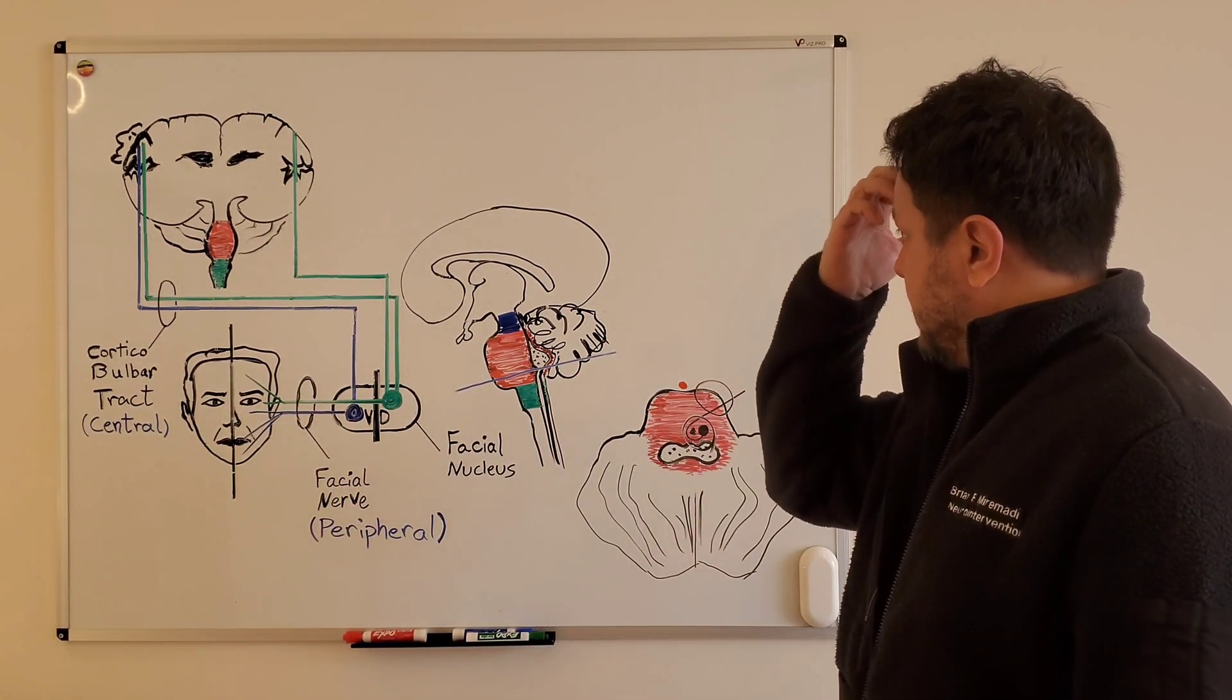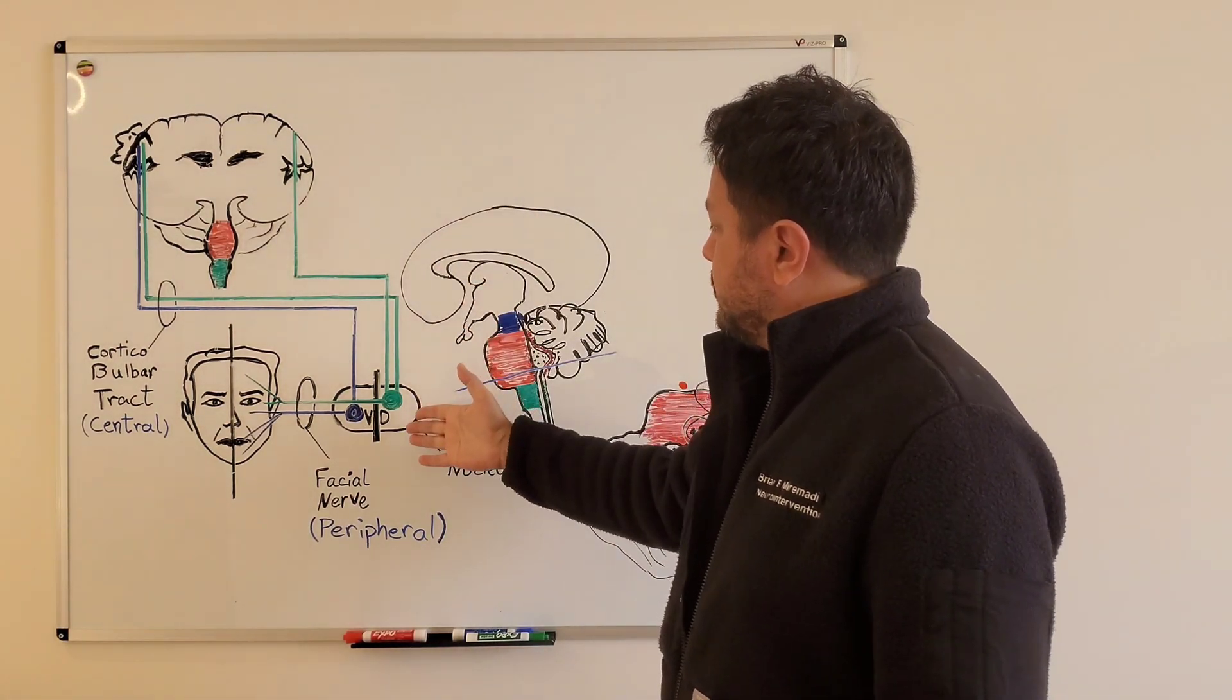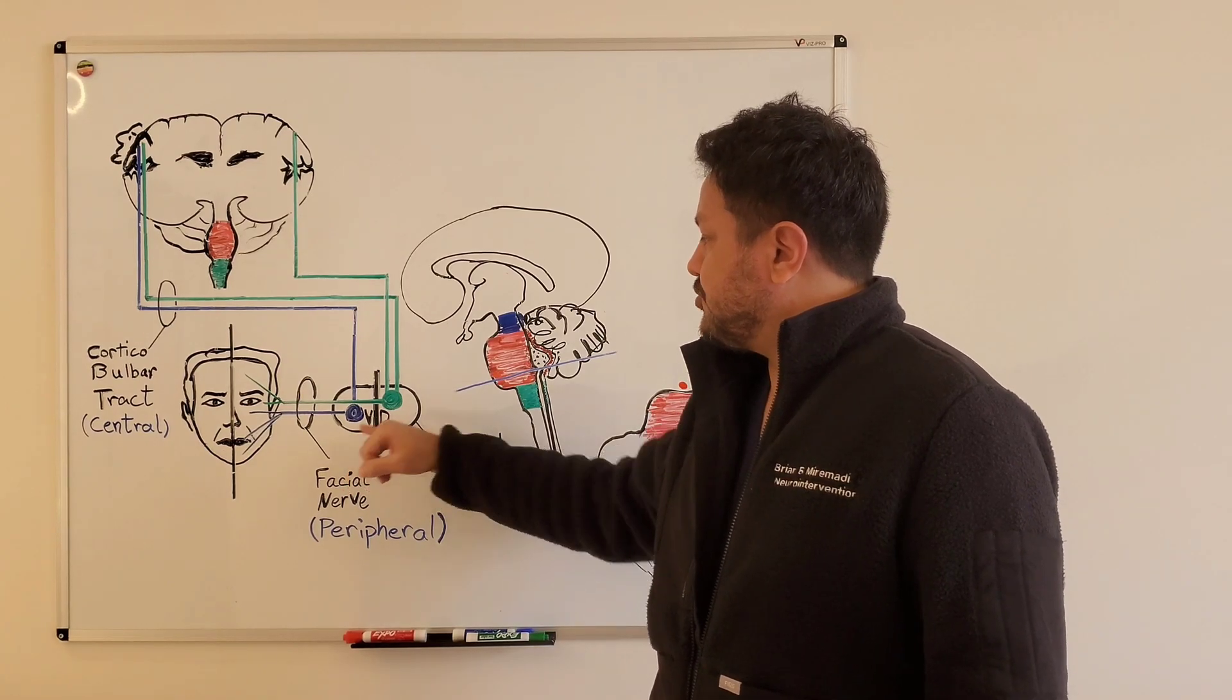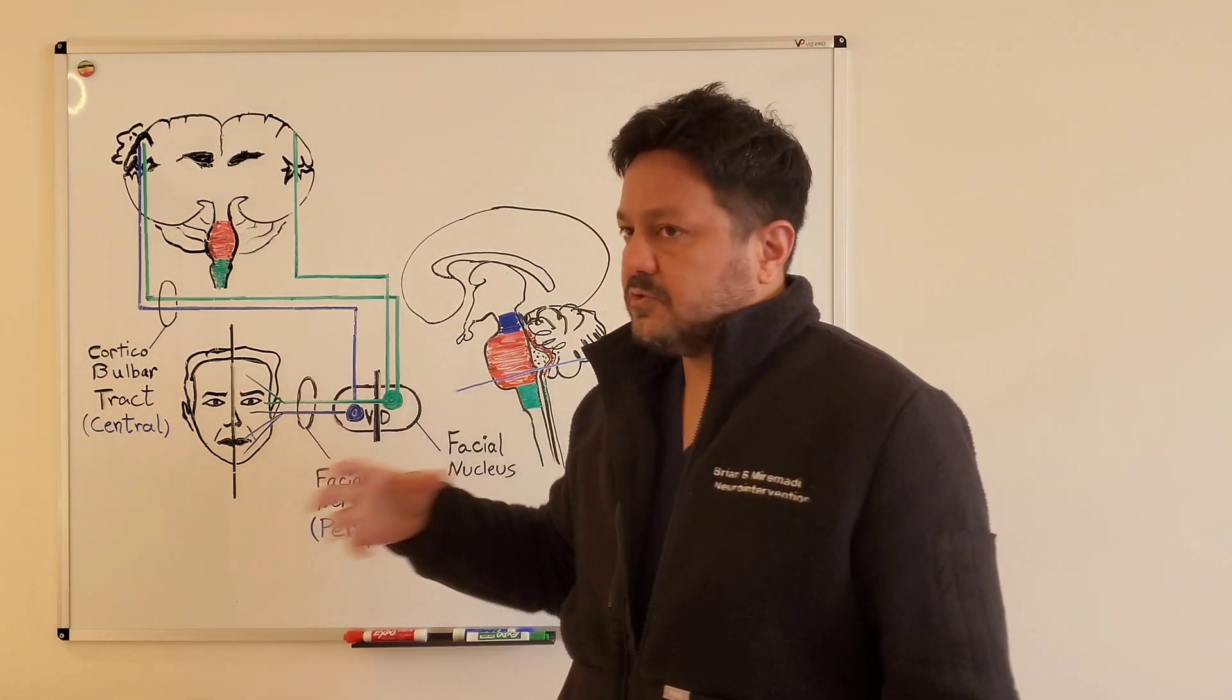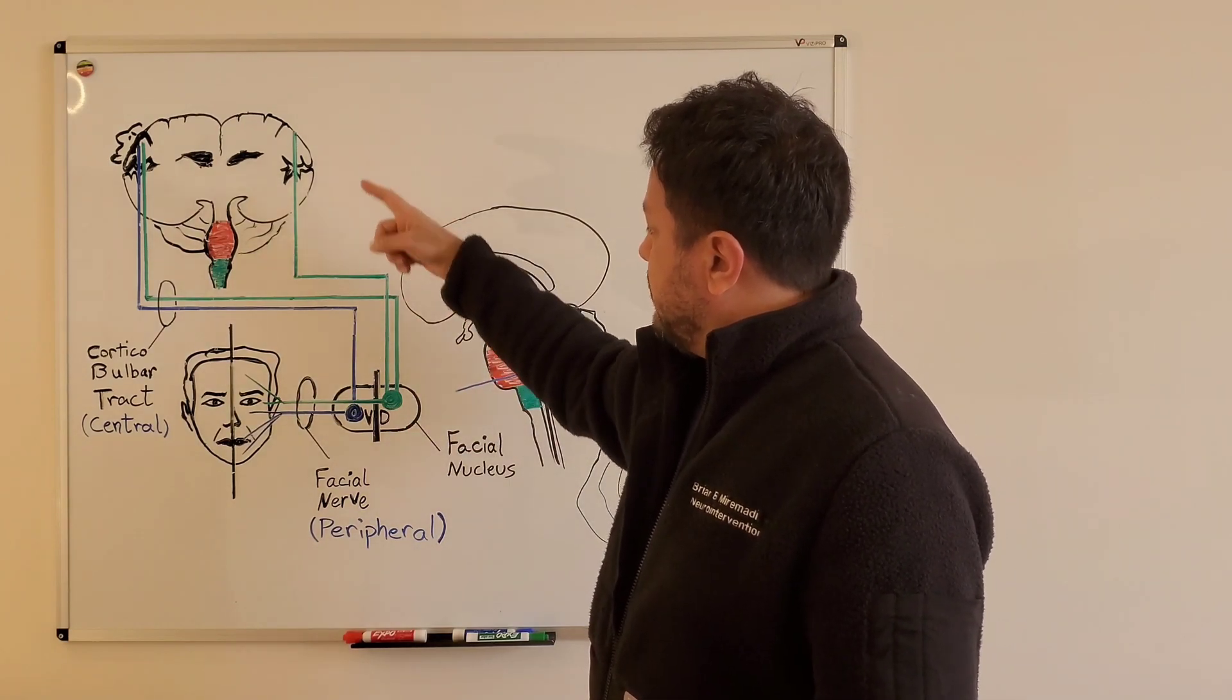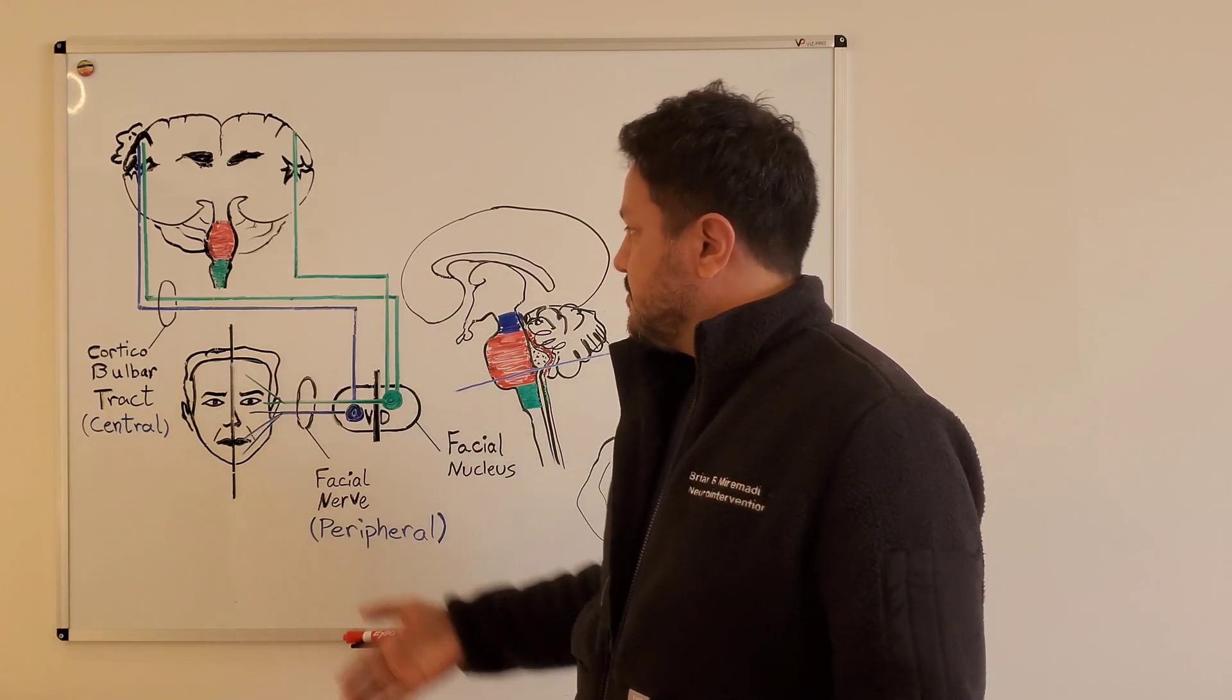Now looking at the innervations coming from the cortex to the nucleus, first it's important to know that the facial nucleus has two parts: a ventral part which receives innervations from the cortex that will eventually go to the lower face, and a dorsal part which receives innervations from the cortex going to the upper face.